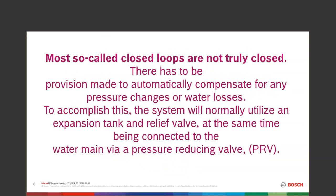Most loops are not truly closed. We have provisions for automatically compensating for pressure changes — as we heat water it expands, as it cools it contracts, so we might add a little more. We have an expansion tank, a relief valve, and usually a pressure-reducing valve connecting us to a water main. Some public water systems are fantastic with great water, but they all have dissolved oxygen. That dissolved oxygen and correct pH are the most important parts of treating our water.